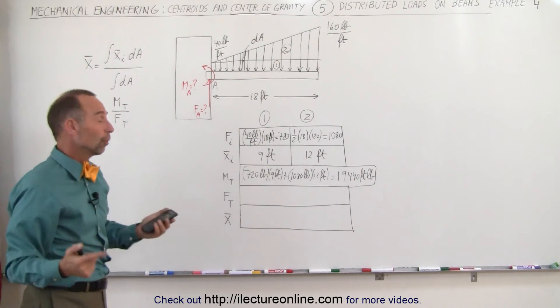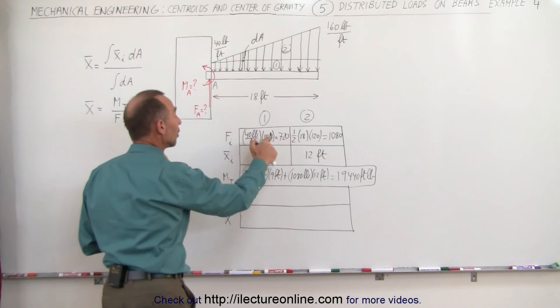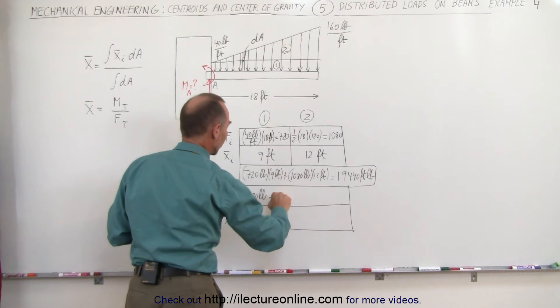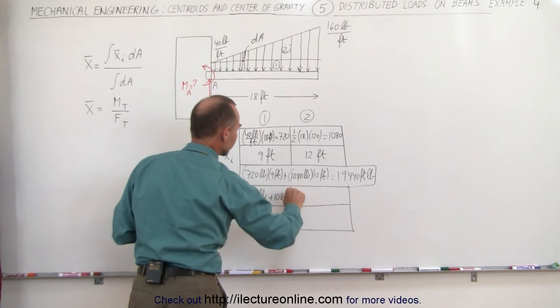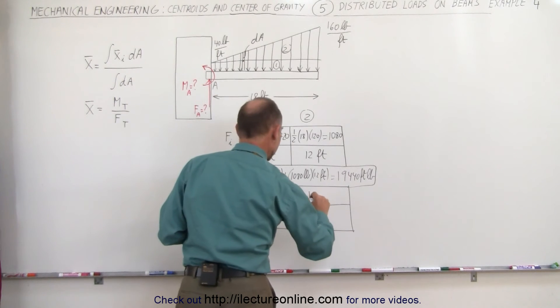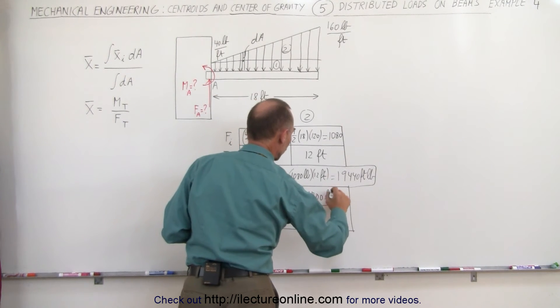Now we need to find the total force. Well, the total force is simply the sum of these two. In that case that would be 720 pounds plus 1080 pounds. Added together that gives us 1800 pounds, which is the total load on the beam.